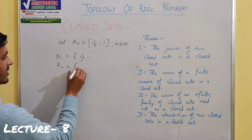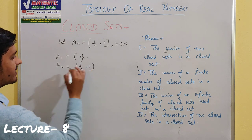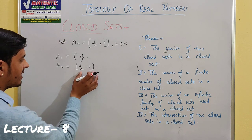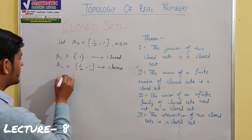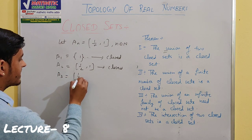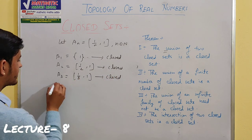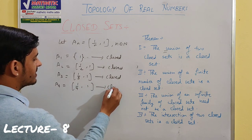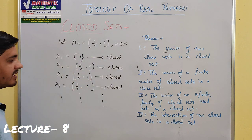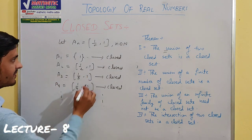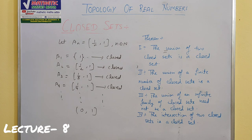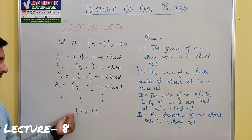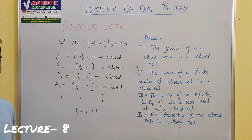A2 = [1/2, 1], which is a closed interval and hence closed. A3 = [1/3, 1], also closed. A4 = [1/4, 1], also closed. As we extend this to infinity, the general interval is [1/n, 1]. When n approaches infinity, 1/n approaches 0. Since we are dealing with infinity, the interval becomes open at 0, i.e., (0, 1], because at infinity the interval is written in open form.